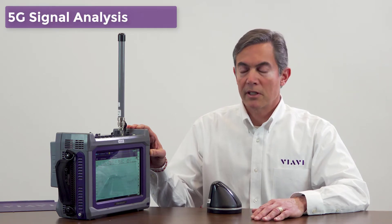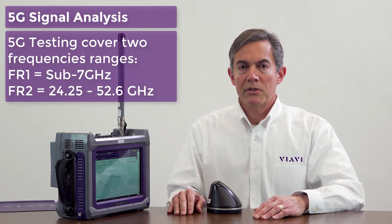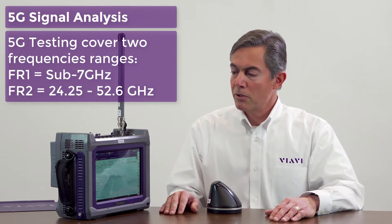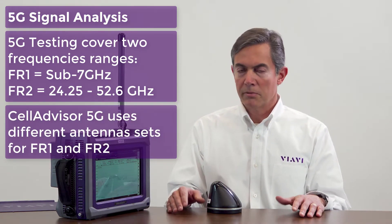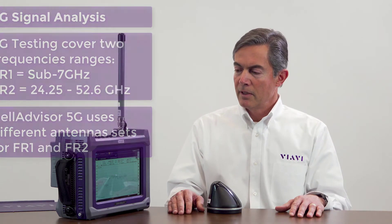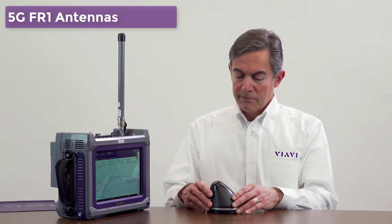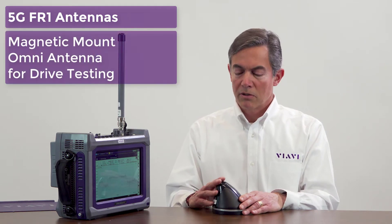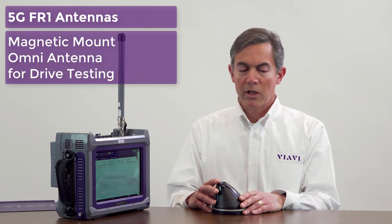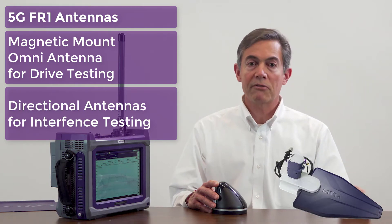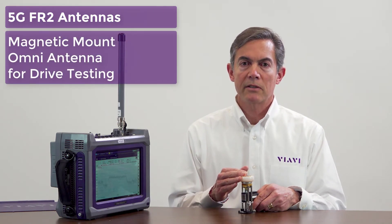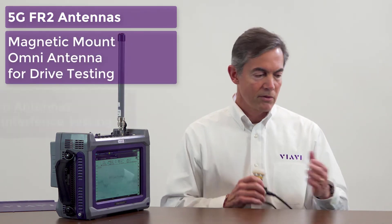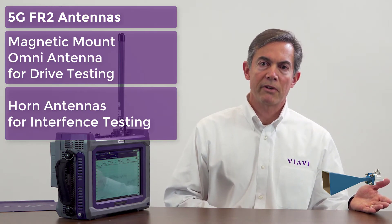We're going to start with 5G testing. In 5G, there are two frequency ranges: Frequency Range 1 and Frequency Range 2. For each, we have two different sets of antennas based upon the test to be done. In FR1, we have omni-antennas for drive tests and directional antennas for interference tests. For FR2, which is millimeter wave, we have omnidirectional antennas for drive testing and horn antennas for interference finding.